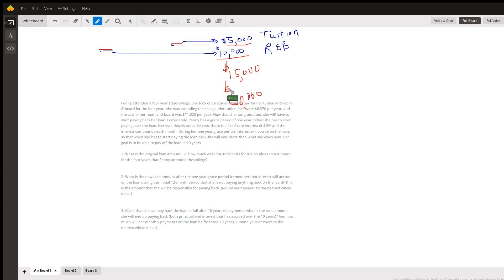That's going to be her original loan amount, and then she's going to pay 4.5% interest compounded monthly for a year to get a new loan amount which is going to be bigger than $60,000. And once we have that new loan amount, then for the next 10 years she's going to start paying that back, and we've got to figure out what her monthly payment is going to be.